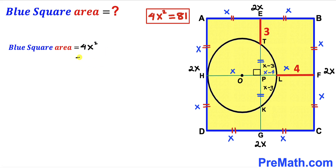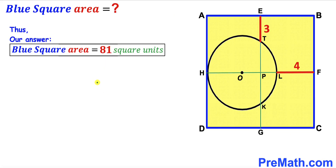So the area of blue square ABCD equals 4X² equals 81 square units. After all the calculations, our blue square ABCD area turns out to be 81 square units — that's our final answer. Thanks for watching and please don't forget to subscribe to my channel for more exciting videos.